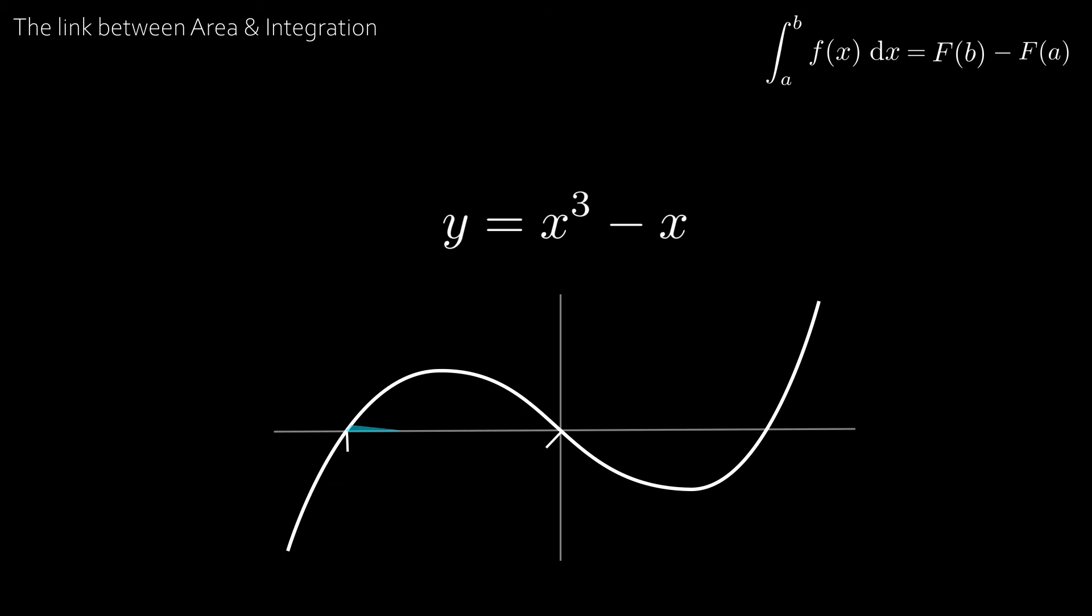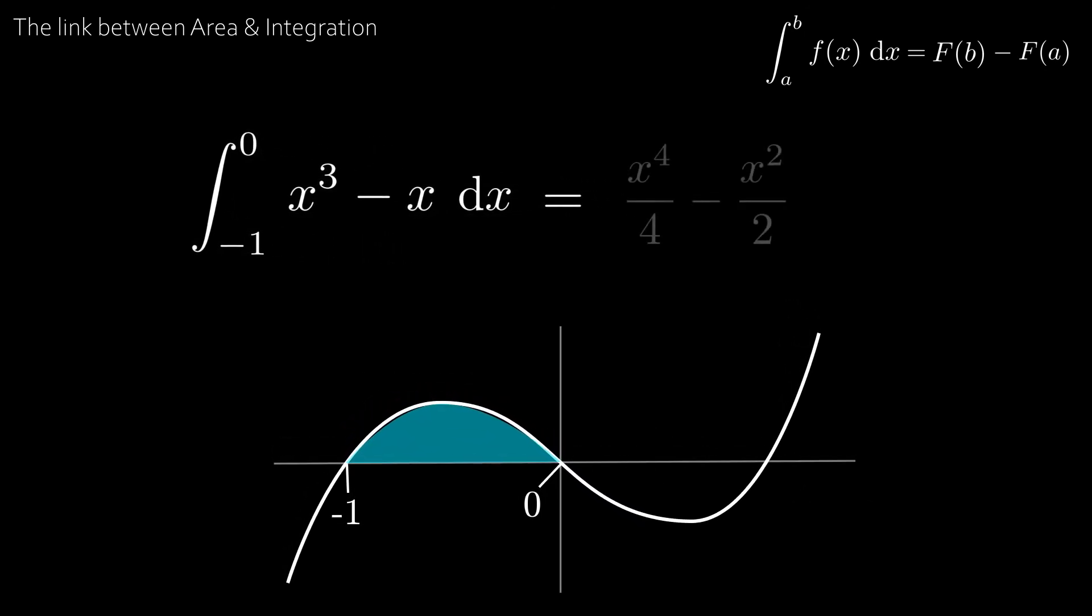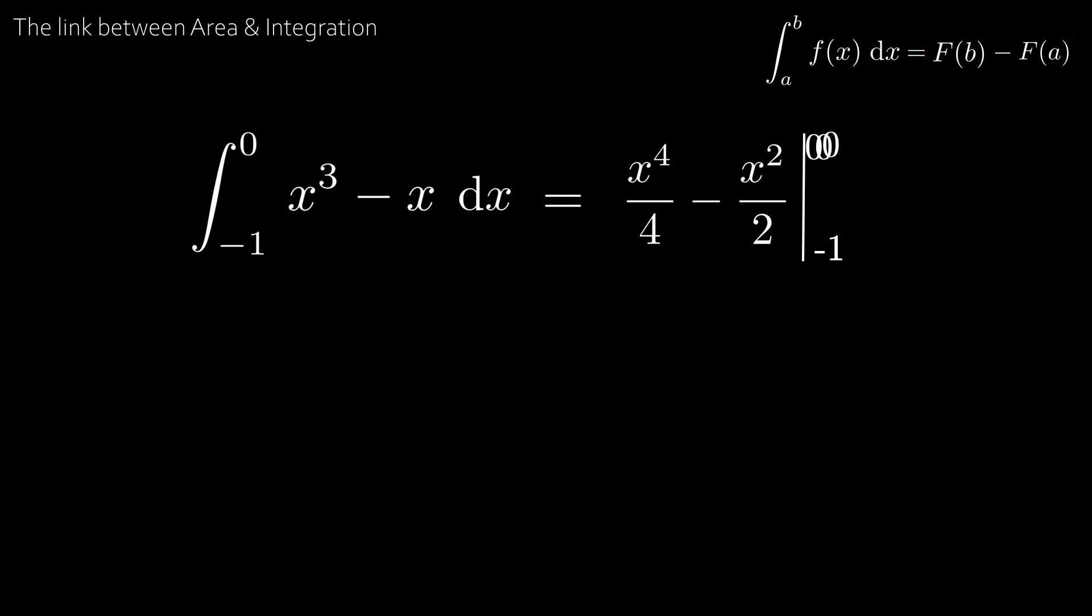So for example take y equal to x cubed minus x. And say you want to find the area between 0 and minus 1. Well we know that this is equal to the integral between minus 1 and 0 of x cubed minus x dx. Which is equal to x to the power of 4 over 4 minus x squared over 2. And we'd write this straight line down here and write 0 at the top and minus 1 at the bottom. Just like the integral. And this is equivalent to the top right part here. So we substitute in the value 0 and take away the value from substituting in minus 1. And evaluating this we get 0 minus minus a quarter which is equal to one quarter. And this is the value for the area.